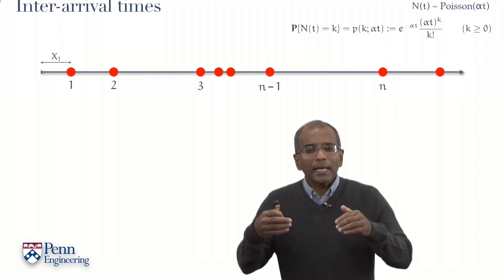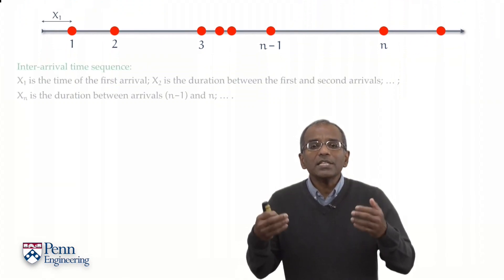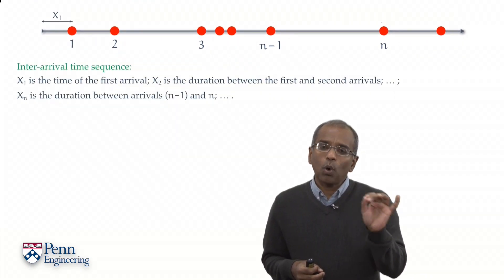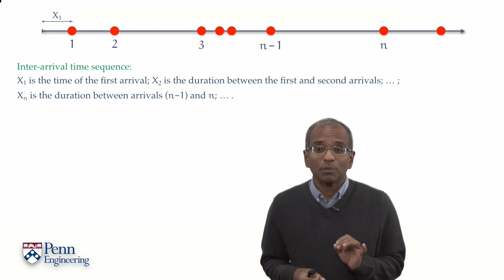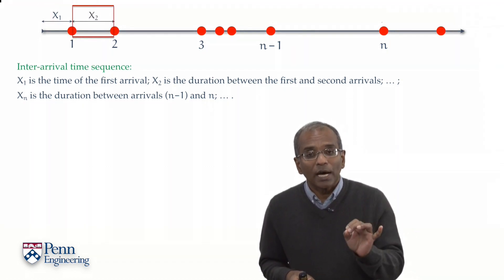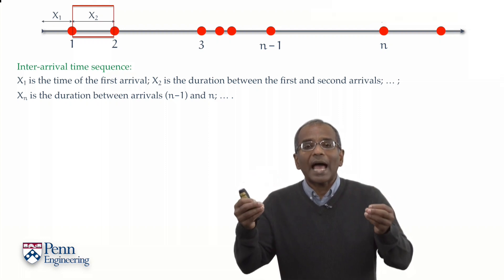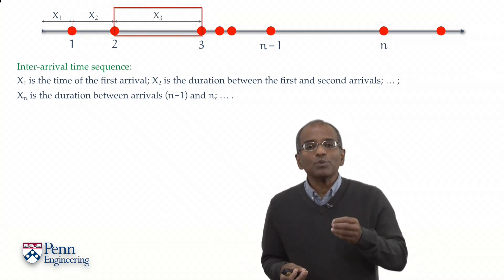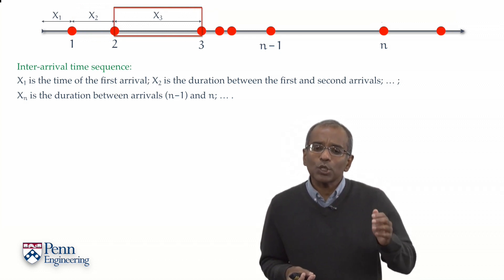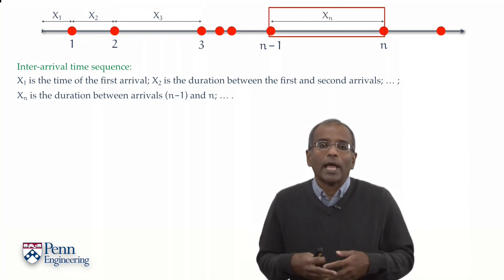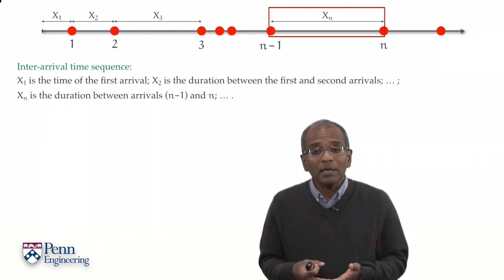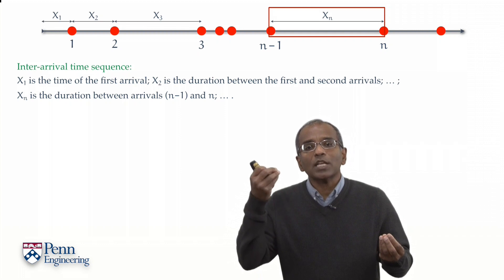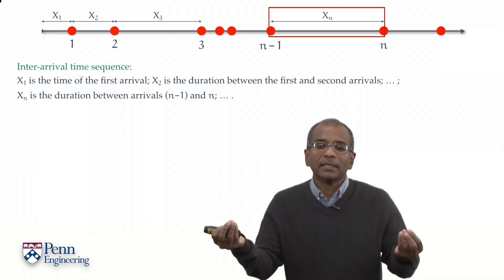Let us look at the sequence of inter-arrival times, where x₁ is the time to the first arrival as before, let x₂ denote the time between the first and second arrivals, x₃ the duration between the second and third arrivals and so on down, xₙ for an arbitrary positive integer n, representing the duration between the (n-1)th and the nth arrivals.